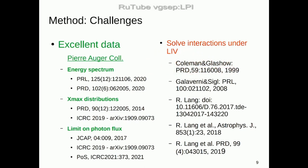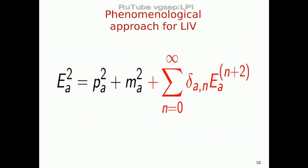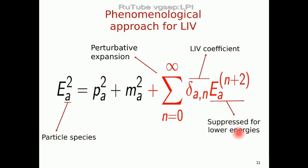The second challenge is to solve all the interactions under Lorentz invariance violation. This was done previously for protons, because people believed only protons were arriving on Earth at these energies. But we had to do it recently for all nuclei. We follow a phenomenological approach by changing the energy dispersion relation with an extra perturbative term suppressed by energy, such that we recover the standard relativity equation at the lowest energies. The LIV coefficients — delta — are all zero in standard relativity, but in our analysis we allow them to be different from zero and search for an upper limit.